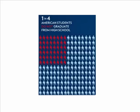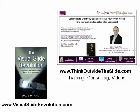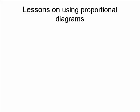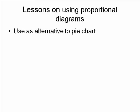Remember, the point of a visual is to make it easy for your audience to understand. So some lessons we should learn about using proportional diagrams. First, remember that this can only be used where we would use a pie chart, because a proportional diagram is an alternative to a pie chart. So where you're showing a percentage or a fraction, that would be a good time to think about using a proportional diagram. Just like in a pie chart, we want to group the related items together so that it's easy for the audience to visually see what that percentage or fraction would be.